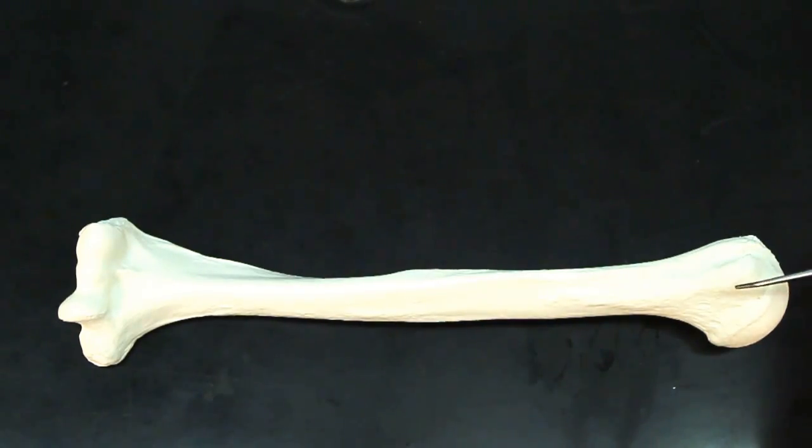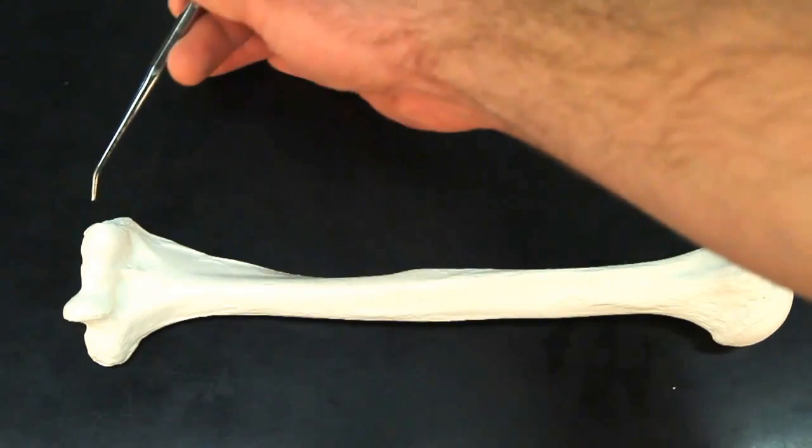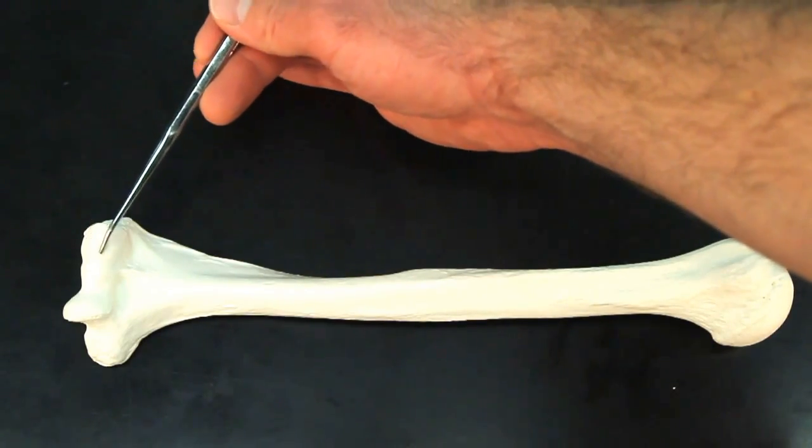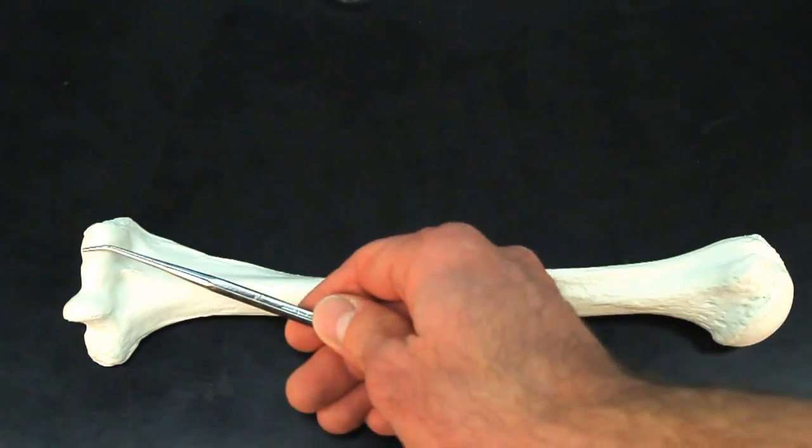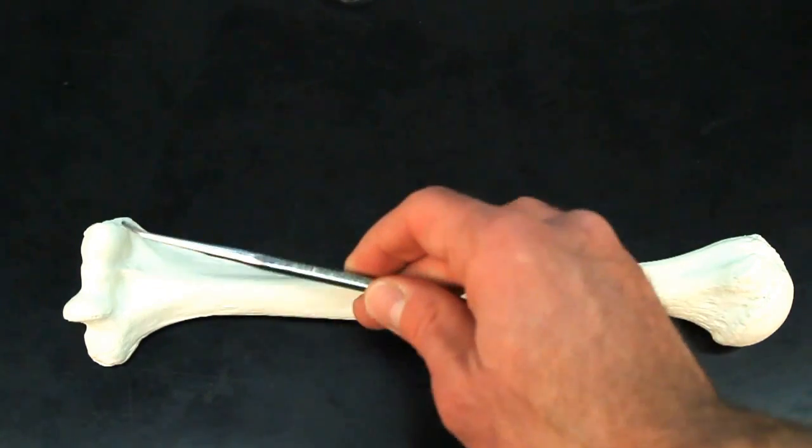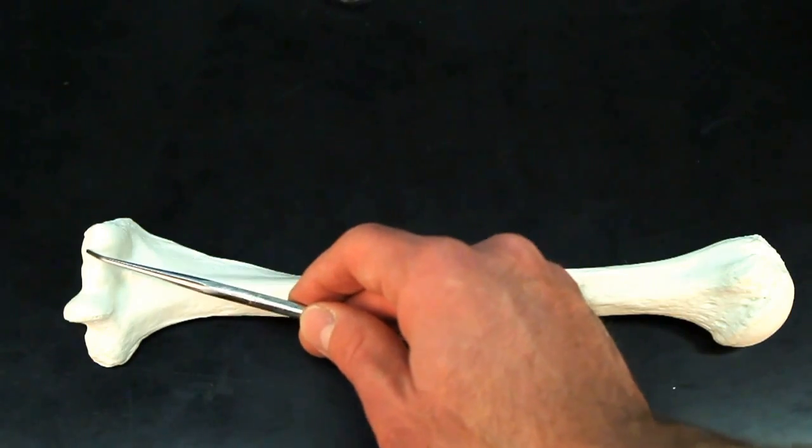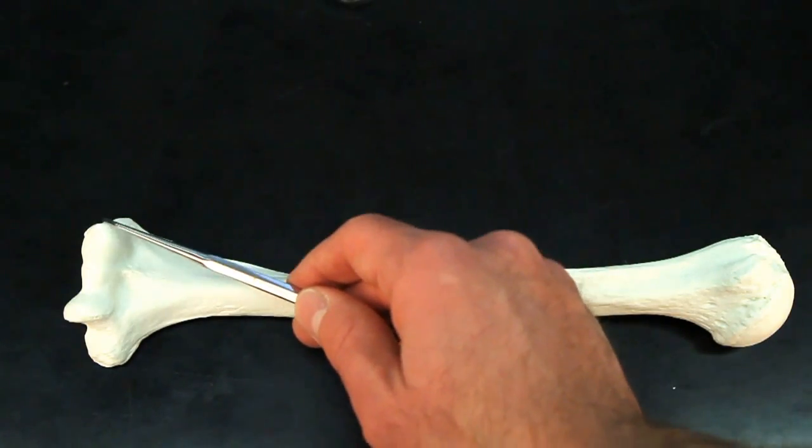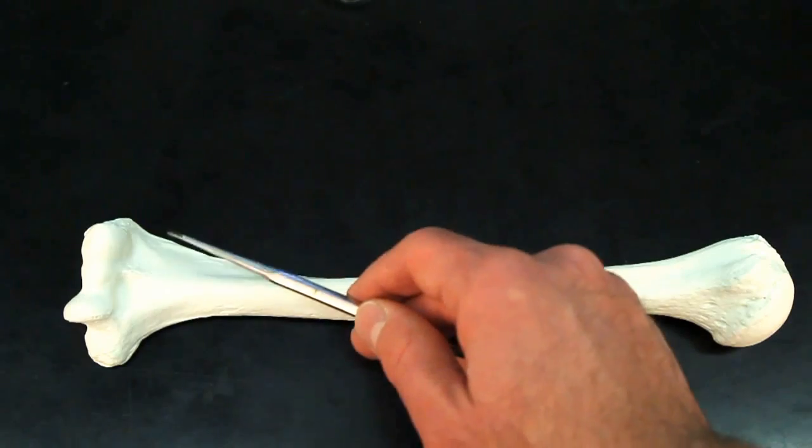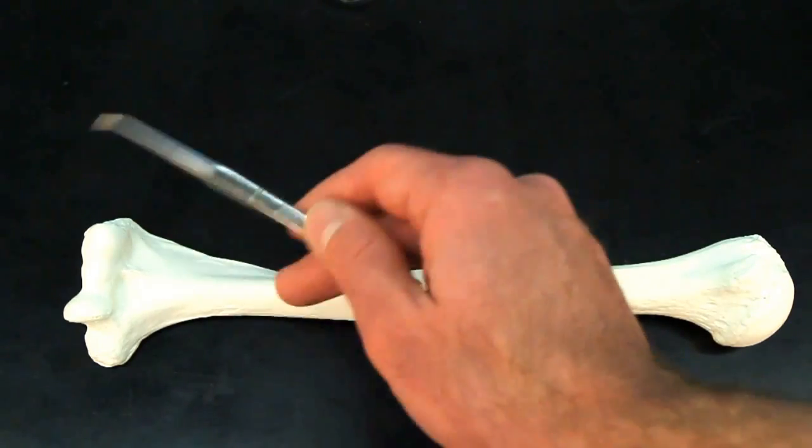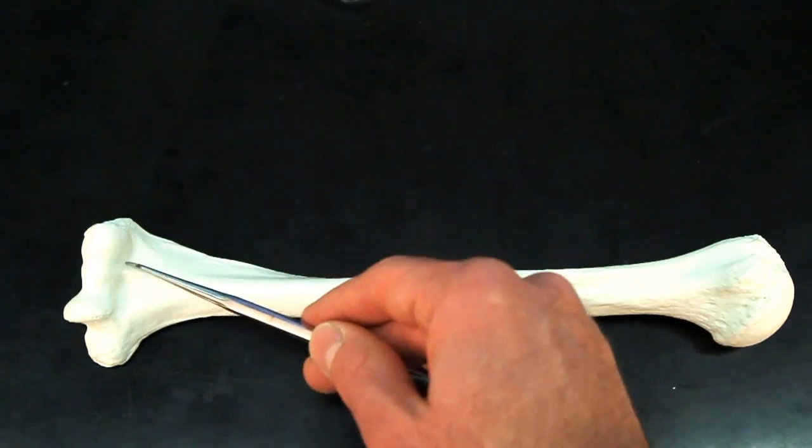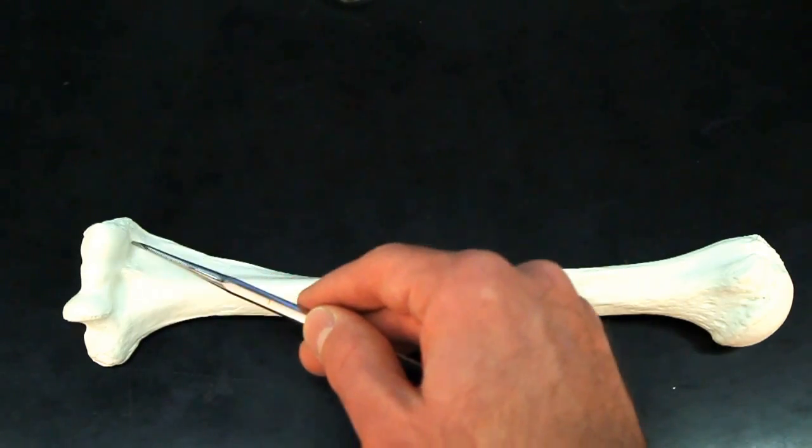Now, if we move from the proximal end to the distal end, the distal end of the bone is going to have your condyles and epicondyles. Now, down here, we can see there's a rounded portion right here and then another smooth indent here. This rounded portion is known as the capitulum. Now, you look at the root word capitate. Think about what capitate means. Capitate means round, like head. Think about decapitate, cut off the head. So, capitulum, that's rounded like a head, round.